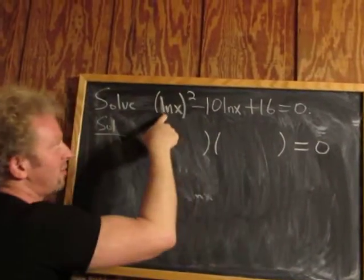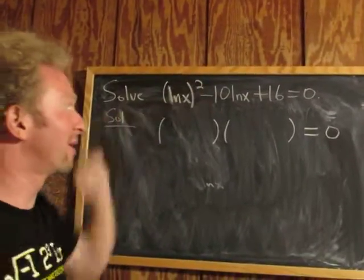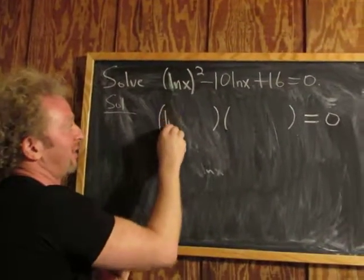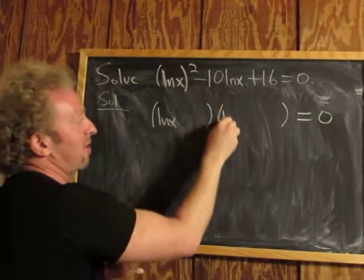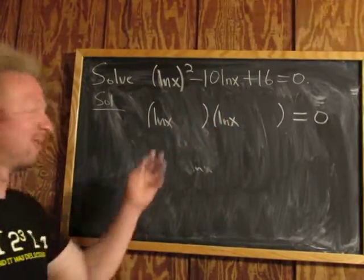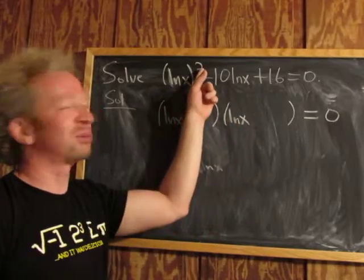We need two terms that multiply to (ln x)². Obviously that's ln x and ln x, because ln x times ln x gives you (ln x)².